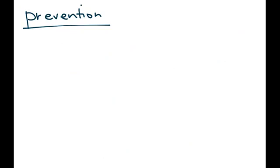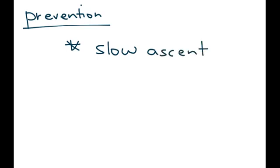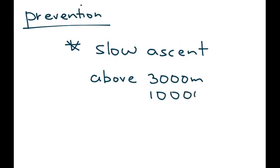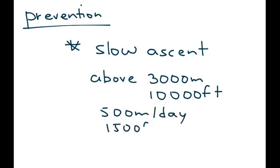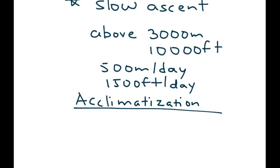Prevention of altitude illnesses is probably the most important part. The biggest advice is slow ascent — climbing the mountain at a gradual pace. Once you get above about 3,000 meters, which is approximately 10,000 feet, you want to go up at about 500 meters per day, or a little over 1,500 feet per day, and no more than that.